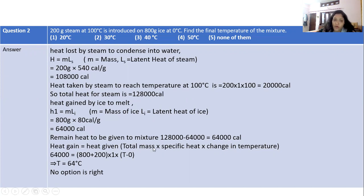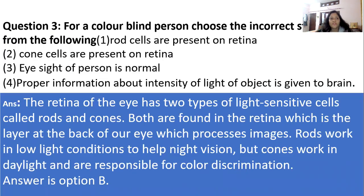Put all values in the formula: total mass × specific heat × change in temperature = 64000. After solving this we will get T = 64°C. There is no option which is 64°C, so answer is none of them. Question number three.